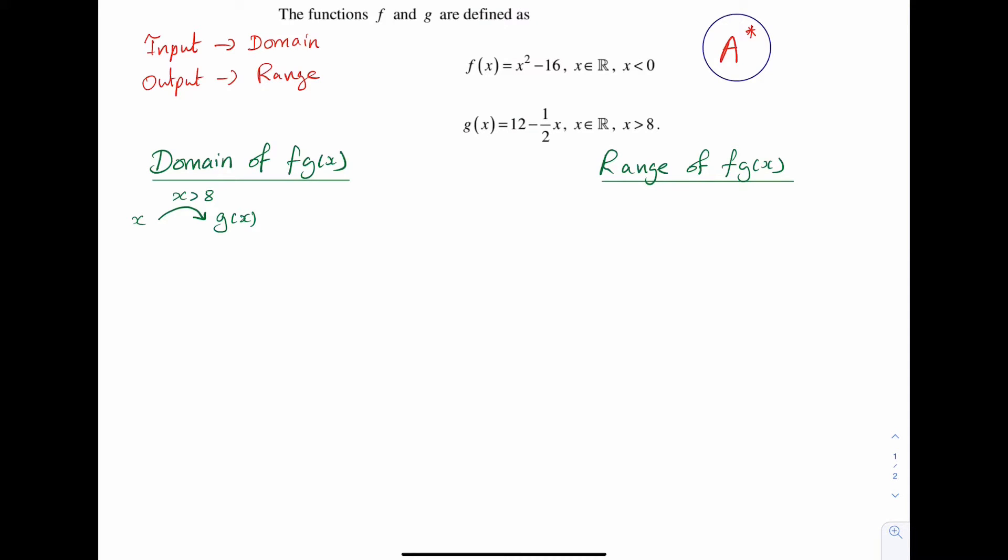Now I'll take g(x) and I'll put it into the function f to give me f of g of x. The input of f has to satisfy x is less than 0. Now g(x) is our input for f. Hence we must have that g(x) is less than 0.